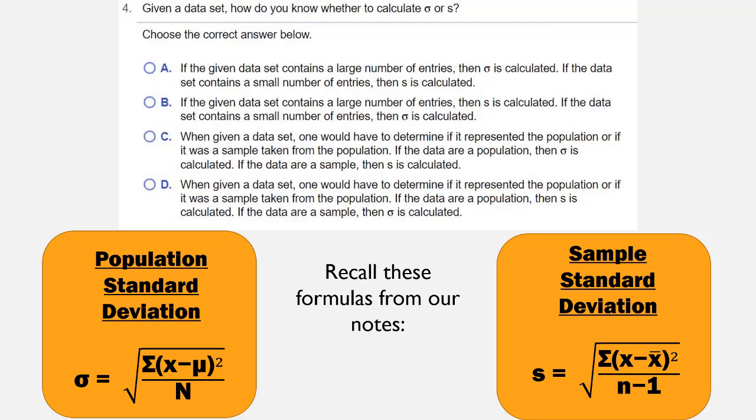So the two formulas we have are for populations and for samples. So the correct answer above is C. When given a data set, one would have to determine if it represented the population or if it was a sample taken from the population.